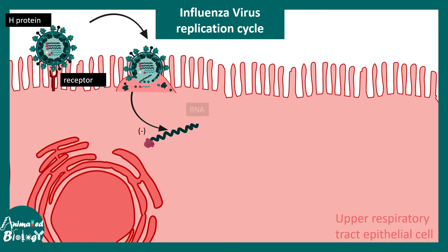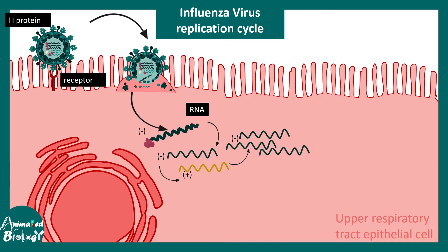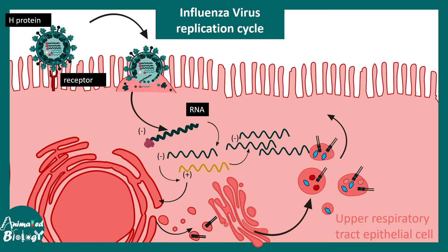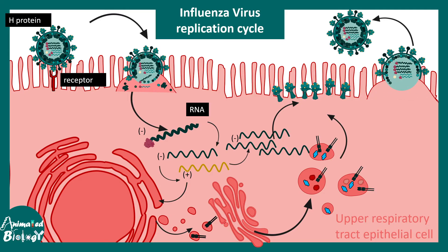The negative sense single-stranded RNA is released into the cytoplasm and gets converted into a transient positive sense RNA, which is used as a template to make more negative sense RNA — this is the viral replication cycle. The positive strand RNA is also used by the host cell to produce viral proteins. These proteins get packaged in the ER and Golgi apparatus and trafficked to specific locations on the membrane, where spike proteins bind to the plasma membrane to form a new viral particle that can bud off from the cell, assisted by neuraminidase.